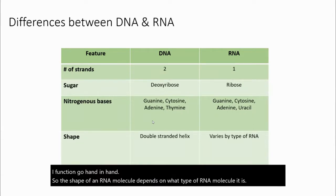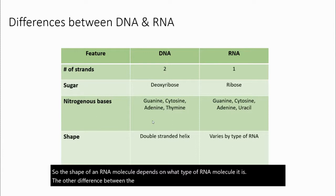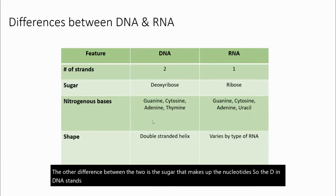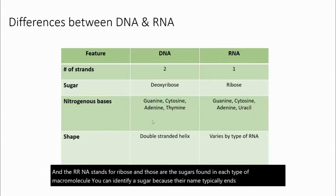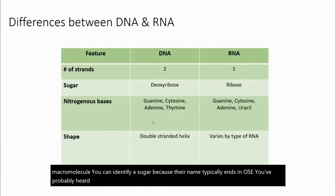The other difference between the two is the sugar that makes up the nucleotides. The D in DNA stands for deoxyribose, and the R in RNA stands for ribose, and those are the sugars found in each type of macromolecule. You can identify a sugar because their name typically ends in O-S-E, like glucose or sucrose.